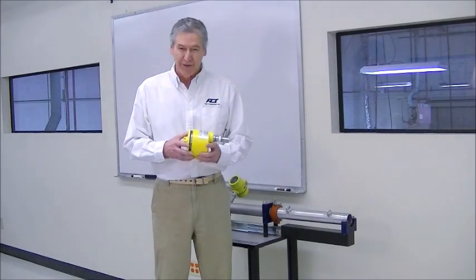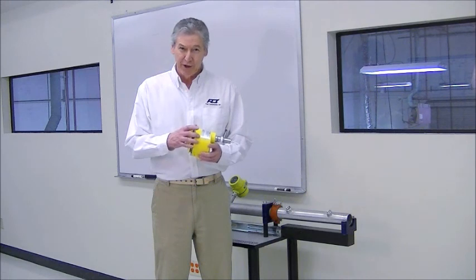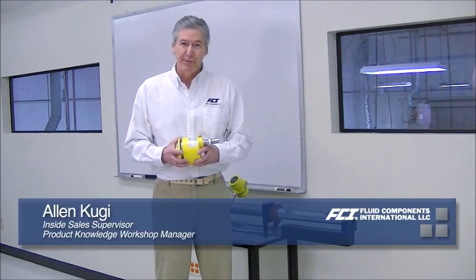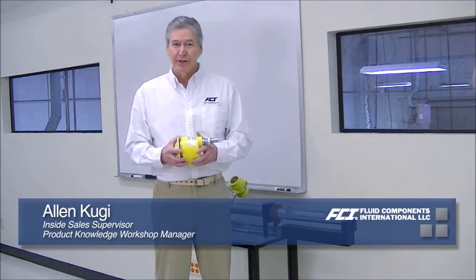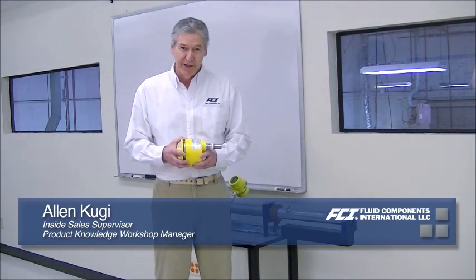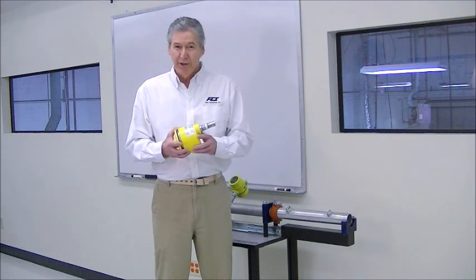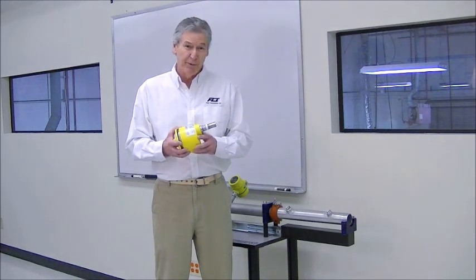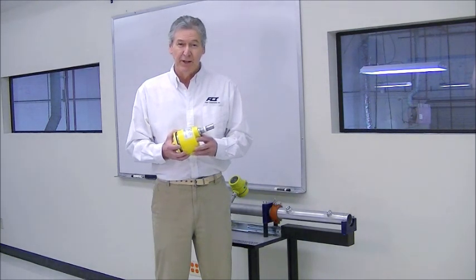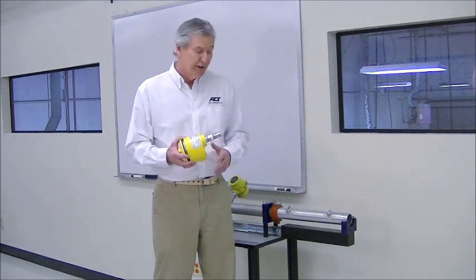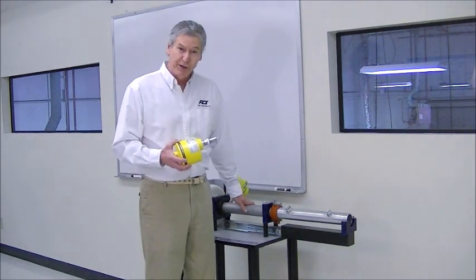Hi, this video is on how to set the relay contact alarms on the FLT-93. My name is Alan Coogie and I'm the Insight Sales Supervisor and Product Knowledge Workshop Manager at FCI. The FLT-93 switch is a flow, level, and temperature switch and can be used in any of those three applications. Today we're just going to focus on how to set it up for a flow application using an FCI portable training stand here.